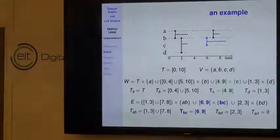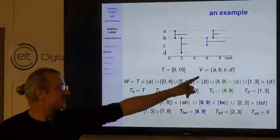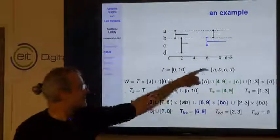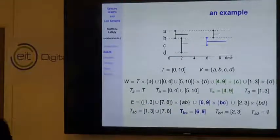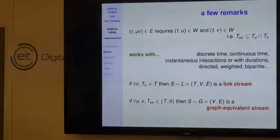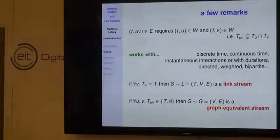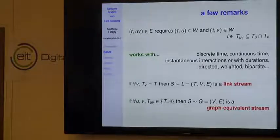Here is a concrete example. T is the interval [0,10], V = {A, B, C, D}. In W, for instance, [4,9]×{C} because C is present from time 4 to time 9—so T_C = [4,9]. Similarly in E, the link between B and C from time 6 to time 9. A key constraint: if there is a link between two nodes at a given instant, both nodes must be present at that instant—(t,u,v) in E requires (t,u) and (t,v) in W.